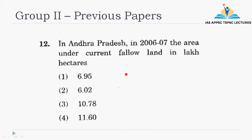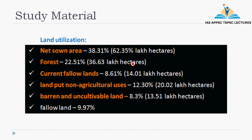This is the area under current fallow land in lakh hectares. Directly, we have an economic survey. This is based on this trend. We also have a study material — to the point, to the exam point. We can simplify the study material. We also have current fallow land.